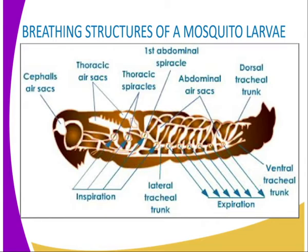Likewise, carbon dioxide diffuses out of the tissue cells and into the fluid, then into the tracheal system, due to a carbon dioxide diffusion gradient. The thoracic spiracle valves close as the abdominal spiracle valves open, and the gas is released through the spiracle openings in the abdomen of the insect.